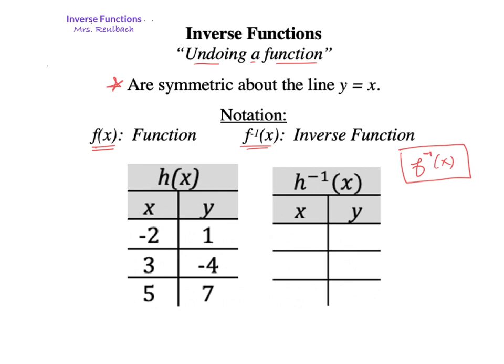For instance, in this example, we have h(x) as the function and h inverse of x as the inverse function. As we've seen many times in class, an inverse function is when you're basically switching the x's and y's. If this is a table for some values of the function h(x), then the inverse function would be 1, -2; -4, 3; and 7, 5. All you've really done is switched x and y. The inverse function switches the x's and the y values.